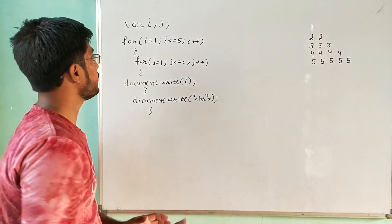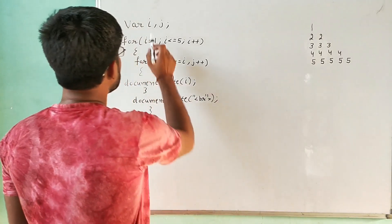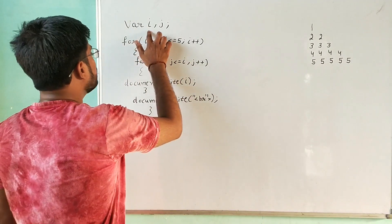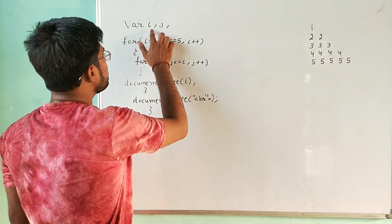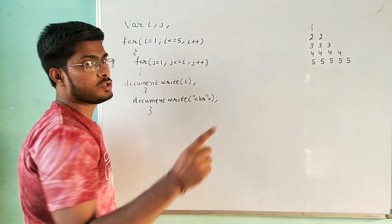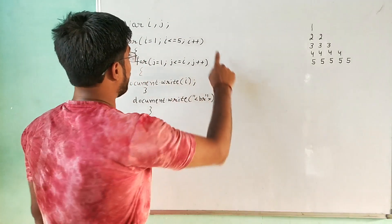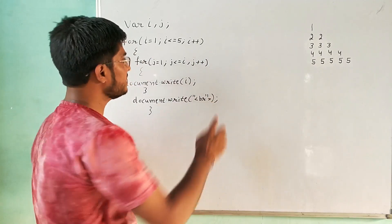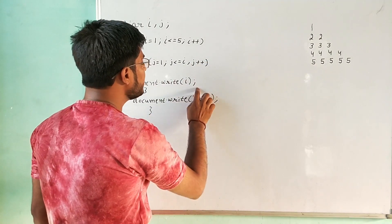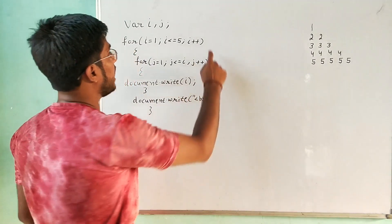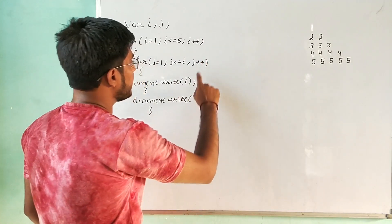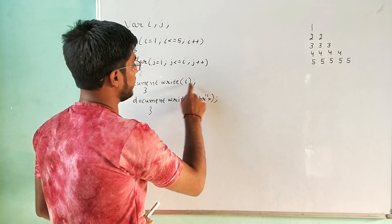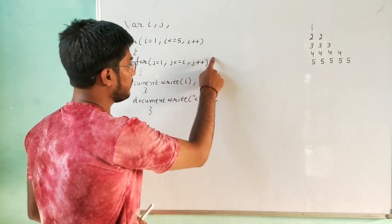First of all, I have taken two variables here: variable i and variable j. Why two variables? Because I am going to use them in two for loops. One is known as the outer for loop and the other is known as the inner for loop. The outer for loop is for the rows and the inner for loop is for the columns, and the inner for loop will also print the value of i.